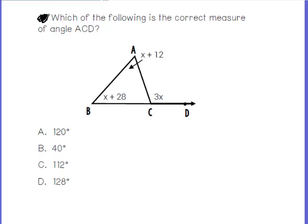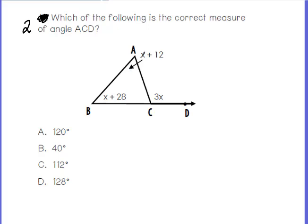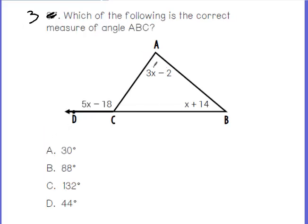Question two asks: which of the following is the correct measure of angle ACD? ACD is the exterior angle. It's not asking for what x is — first find x, then plug its value back into 3x to get the actual angle measure, and match it to one of the given answers. Question three asks for the correct measure of angle ABC, which is x + 14. Find x, then plug it into x + 14 to find the actual measure of the angle.